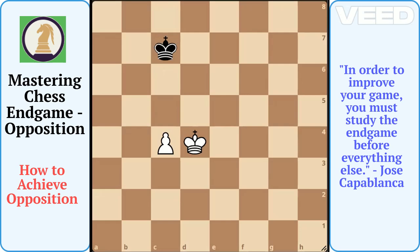In direct opposition, the kings are facing each other with one square between them. The three squares in front of the opponent's king are called critical squares. If it is white's turn, white can win direct opposition and force the black king to move away from the critical square. Then white will promote the pawn and win the game. Let's see how.